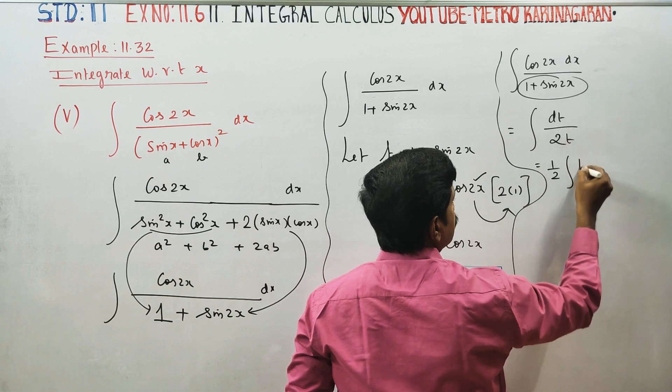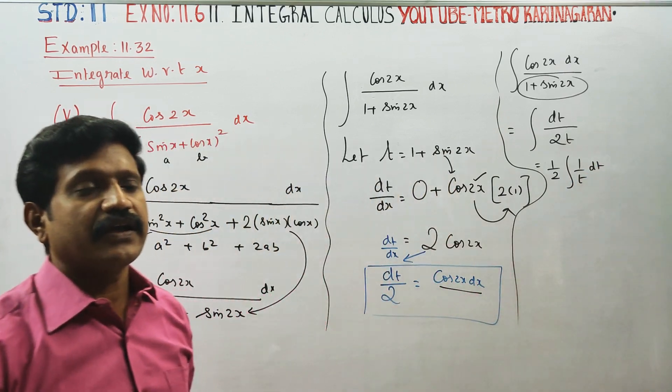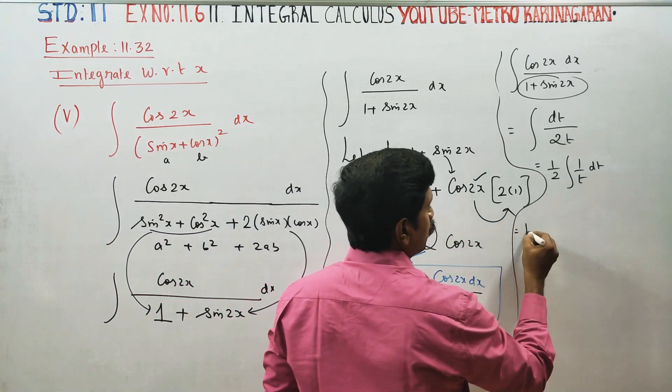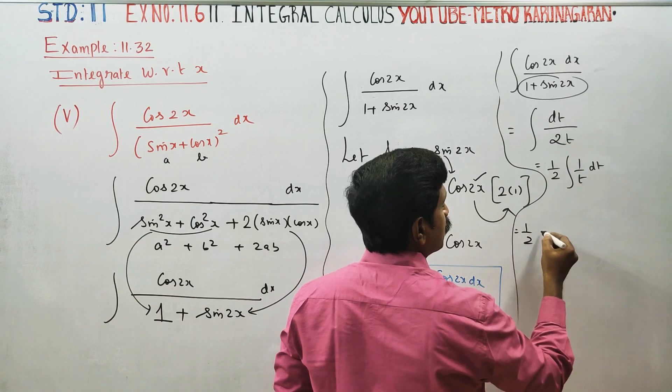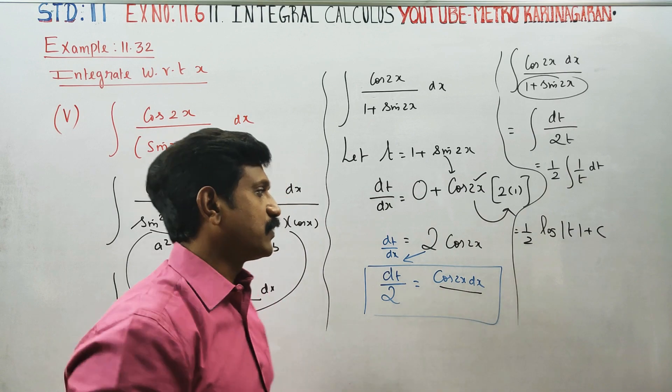One-half times the integration of 1/t dt. The integration of 1/t is log(t), or log modulus of t for positive values.